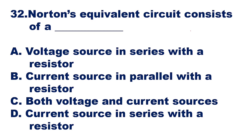Question 32: Norton's equivalent circuit consists of — option B, a current source in parallel with a resistor, is the right answer. Whereas Thevenin's had a voltage source in series with a resistor, Norton's equivalent circuit consists of a current source in parallel with a resistor.